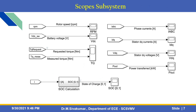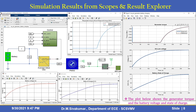Using the scopes subsystem we can measure rotor speed, battery voltage, requested torque versus measured torque, state of charge, power transferred, and phase currents with current and voltage waveforms. Using the Simulink result explorer you can also get the waveforms — generator torque versus time, DC link voltage, battery state of charge, battery voltage, and state of charge percentage.